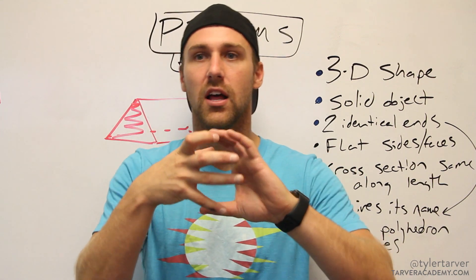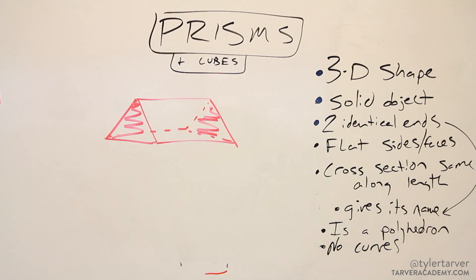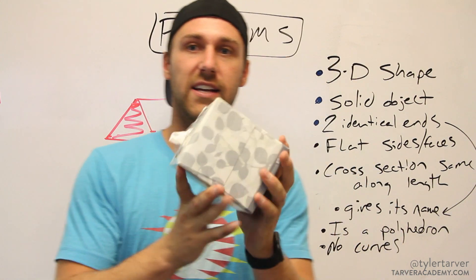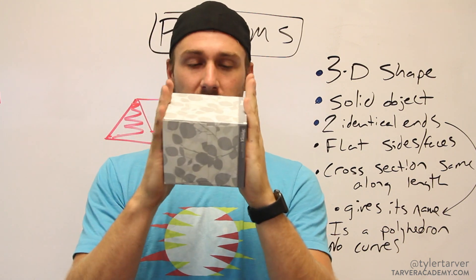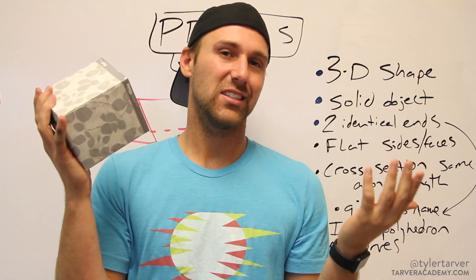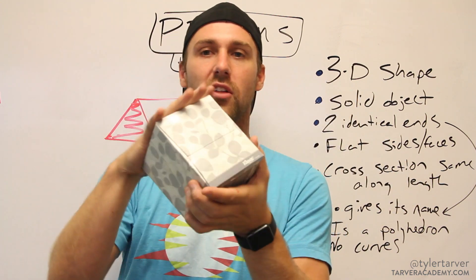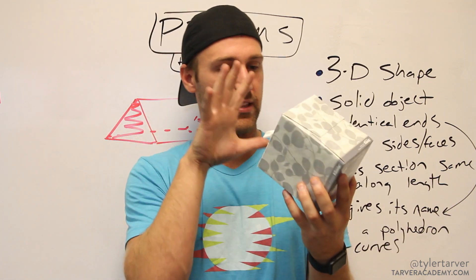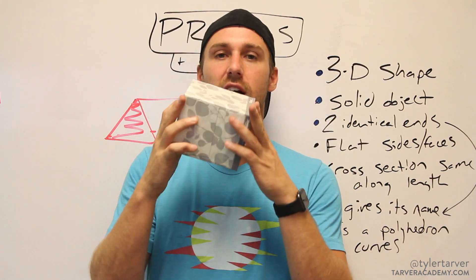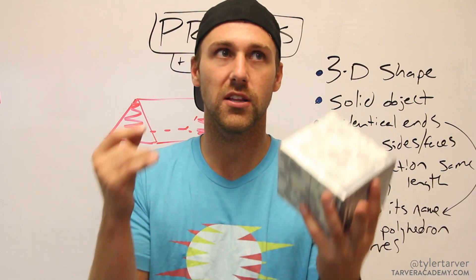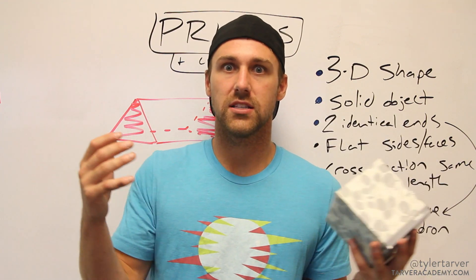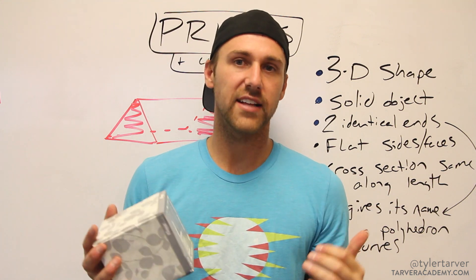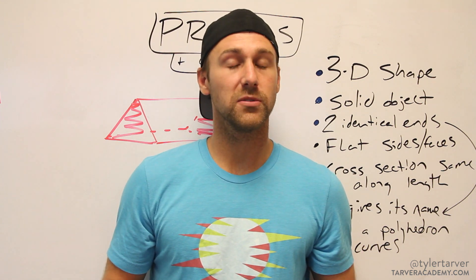Now let's talk about a cube. Here's a cube — it's a prism. You've got a square and a square connected by flat sides. If it's stretched out with a square on each end it's still a rectangular prism, but when you shorten it so all flat surfaces are the exact same and all angles are 90 degrees, it's called a cube. A cube is essentially the perfect prism — one shape, one size, everything perfectly put together.